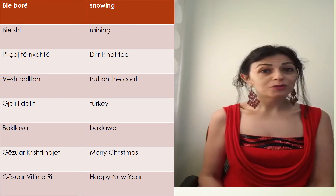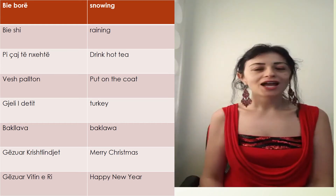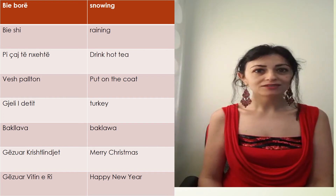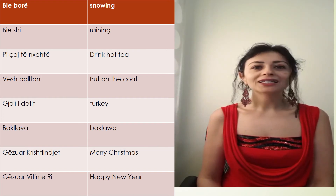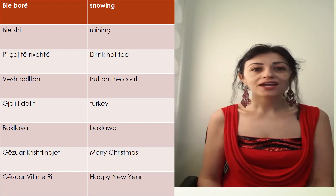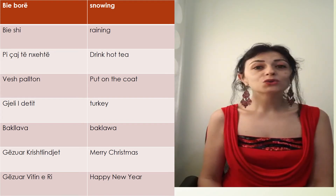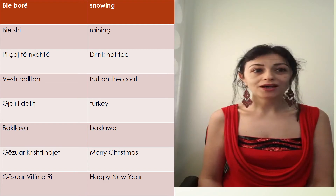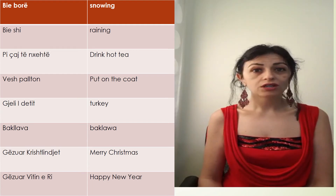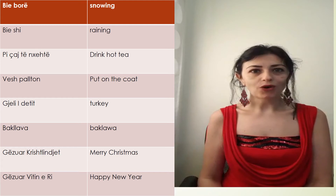Let's repeat what we learned today. Winter: dimri. Cloud: reja. Rain: shiu. Wind: era. Snow: bora. Storm: stuhia. Cold: ftohtë. Snowman: buri i borrës.